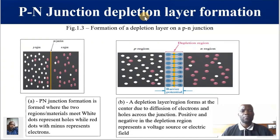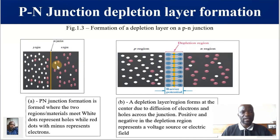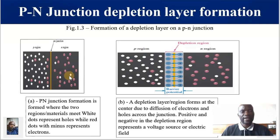PN junction depletion layer formation: when the P and N-type materials are brought together, immediately a junction is formed, normally at the center where the two materials meet. We have the P region and the N region; the white dots represent holes, while the maroon dots with minus signs represent electrons. Take note of the minority charge carriers on both the N side and the P side.